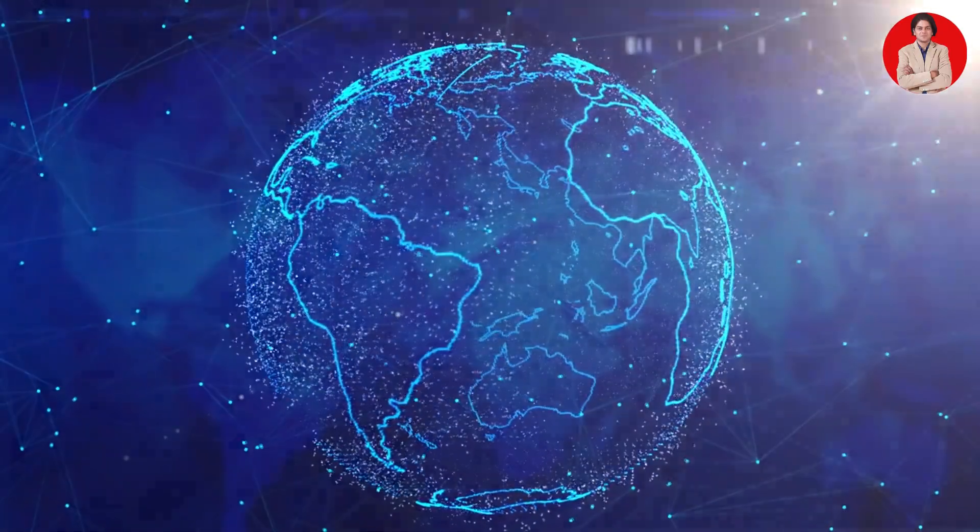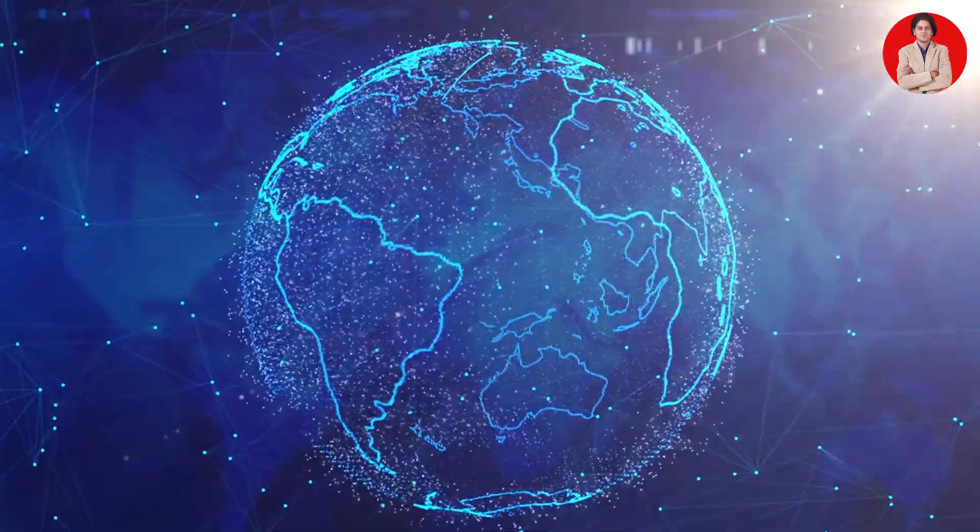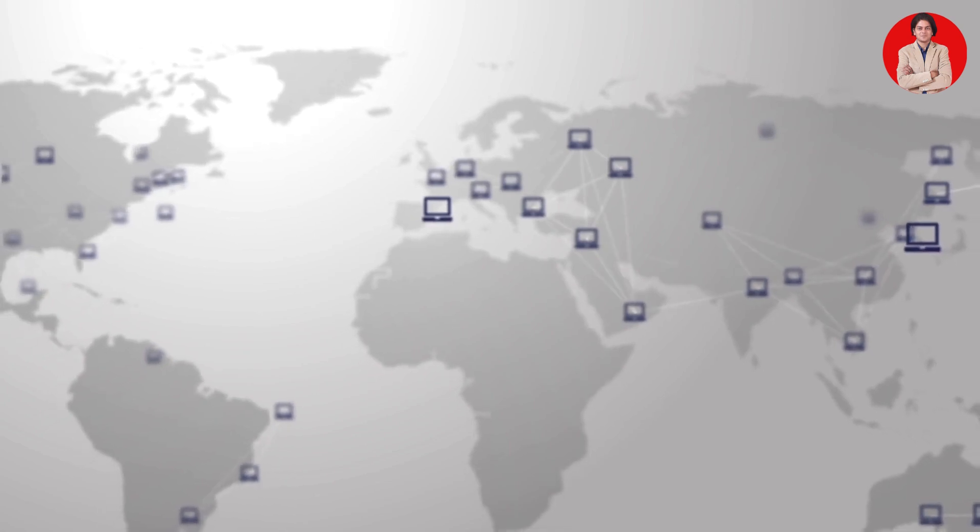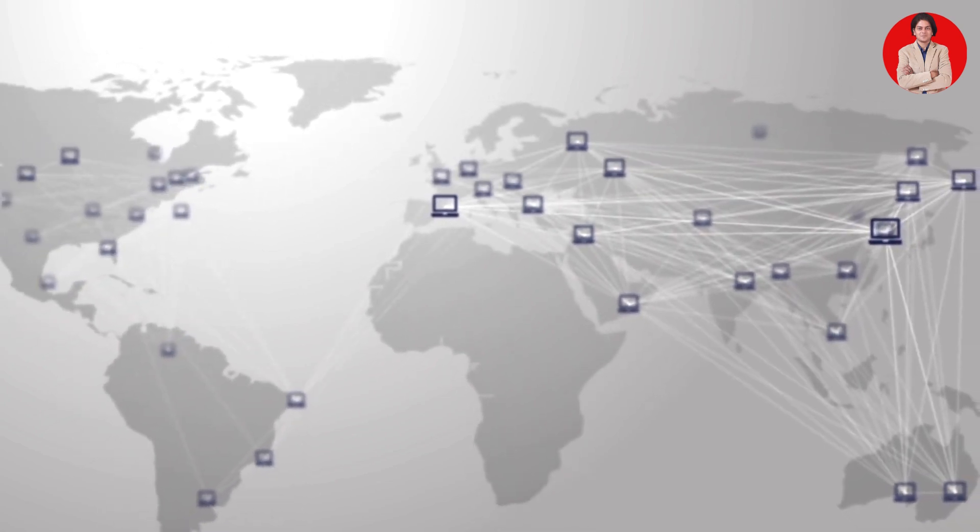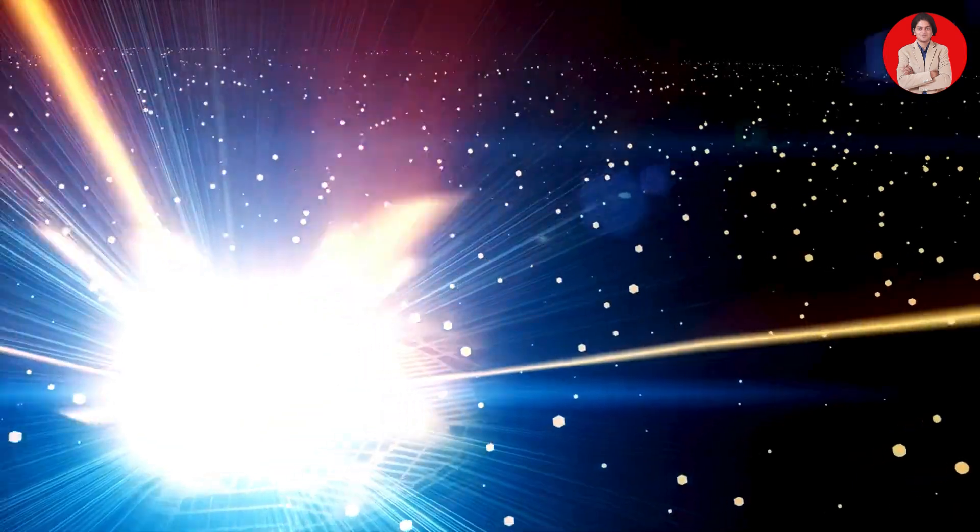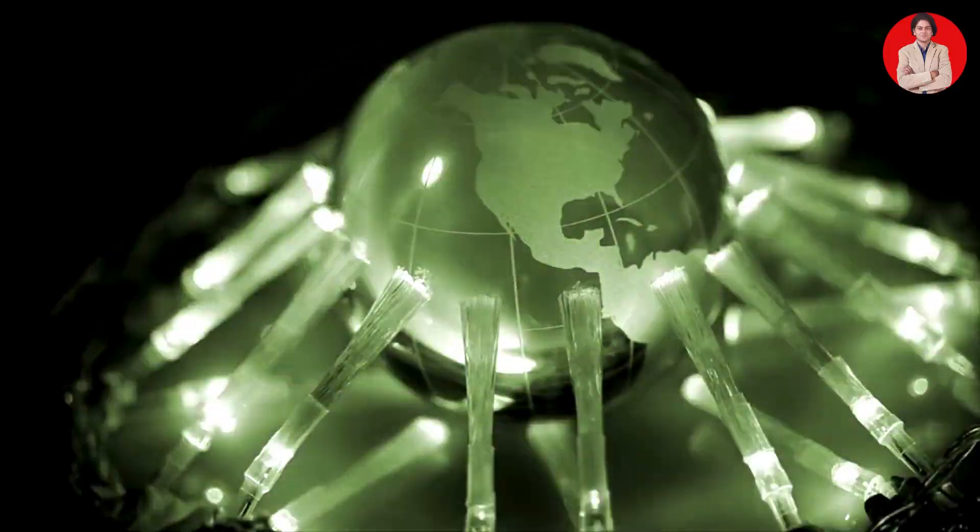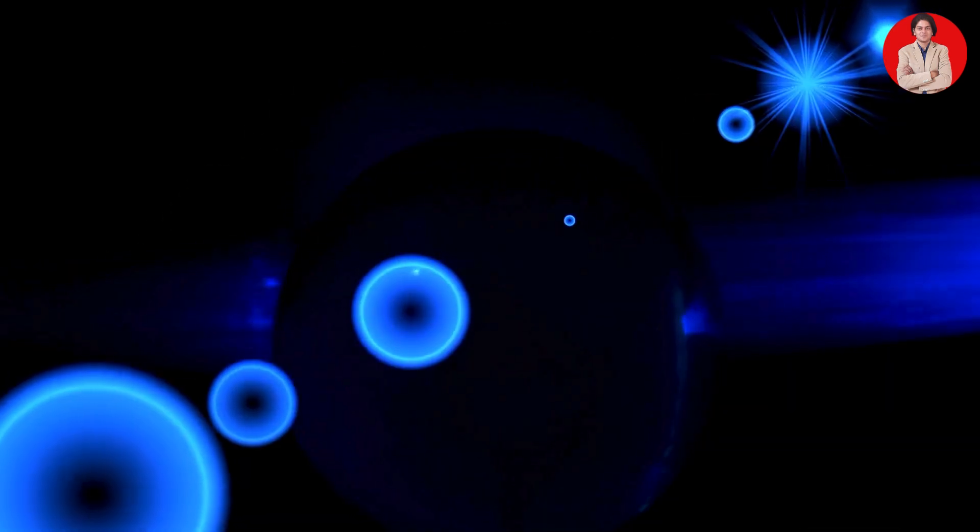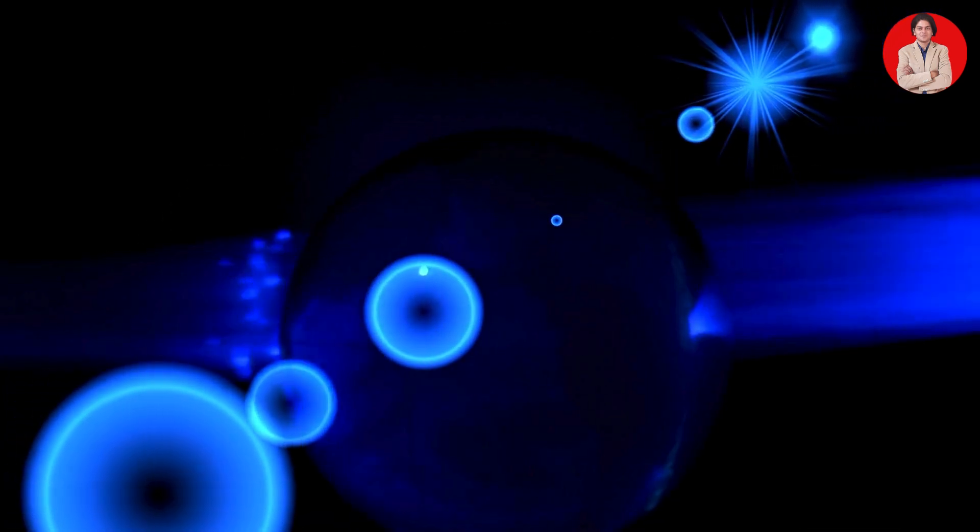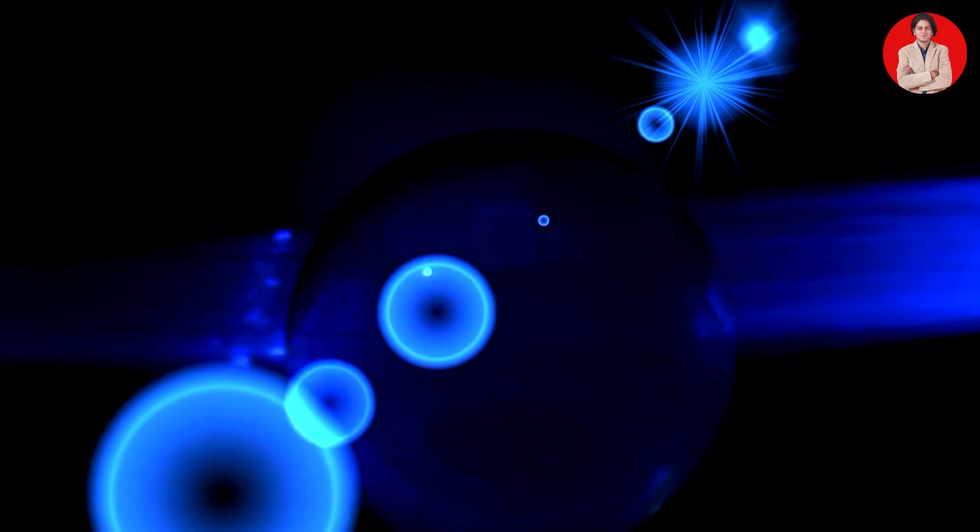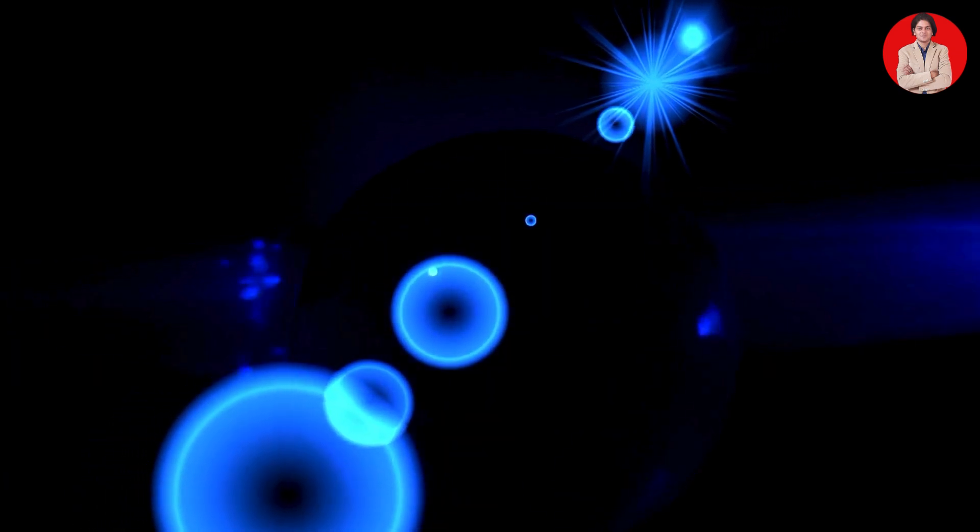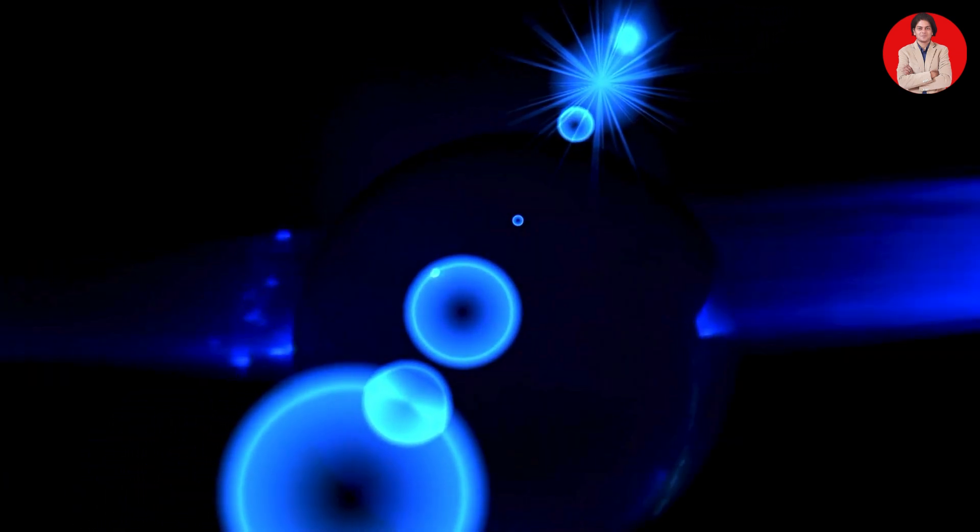The Internet, a network of networks: The Internet is the ultimate example of a computer network. It's a global network of interconnected networks, spanning the entire world. The Internet relies on a complex set of protocols and technologies to ensure that data can be transmitted reliably between billions of devices.